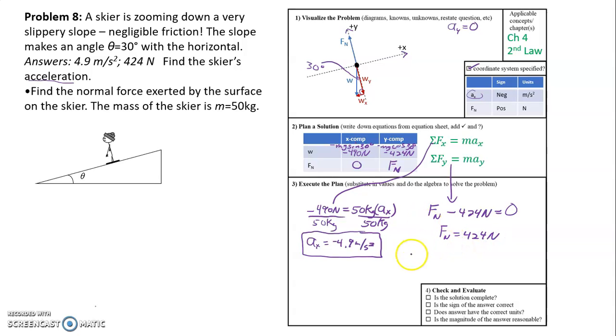Is the solution complete? Yes. We have a magnitude and direction for our acceleration. And we found the magnitude of our normal force. So that's complete. Signs of the answers are correct. Just what we predicted them to be.